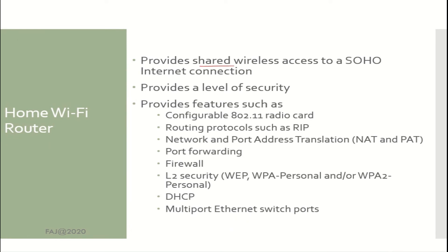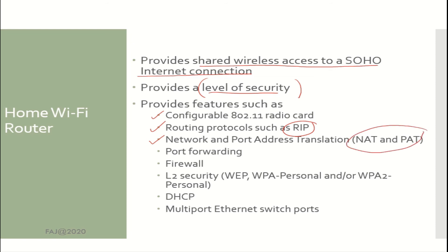A Home Wi-Fi Router provides shared wireless access to a SOHO Internet connection and provides a level of security. Features include a configurable 802.11 radio card, routing protocols such as RIP, network and port address translation (NAT and PAT), port forwarding, firewall, layer 2 security (WEP, WPA Personal, and WPA2 Personal), DHCP, and multiport Fast Ethernet switch ports.